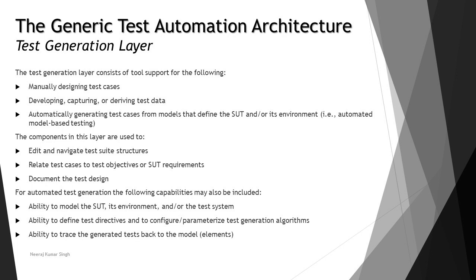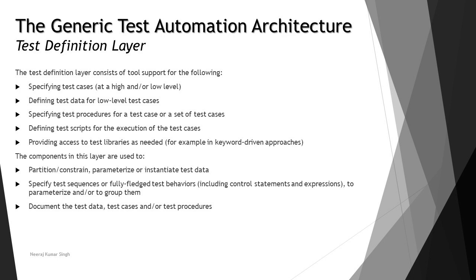Next is the definition layer. First is the generation layer, which is about creating or generating manual activities into automation. Now we talk about the definition layer — how you define things after bringing manual concepts into automation. The test definition layer consists of tool support for the following activities.